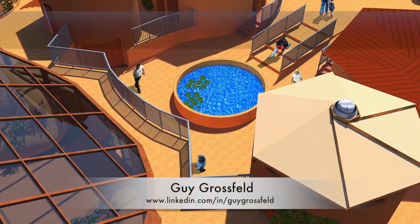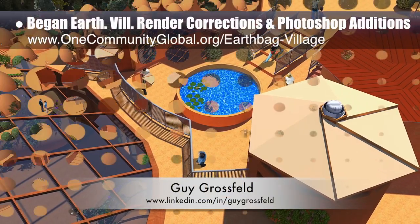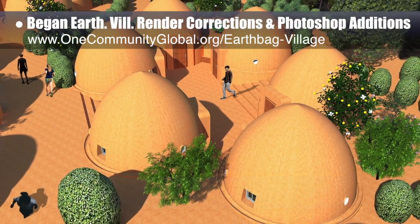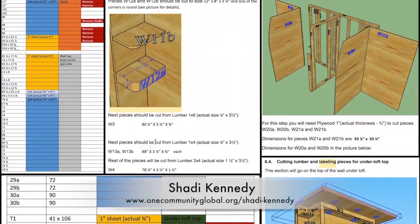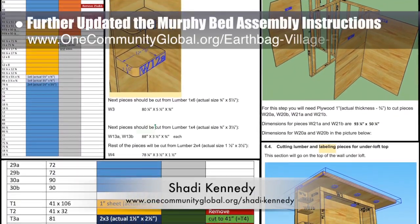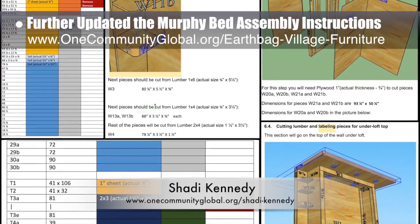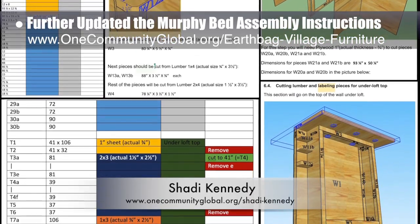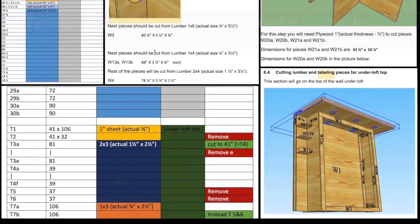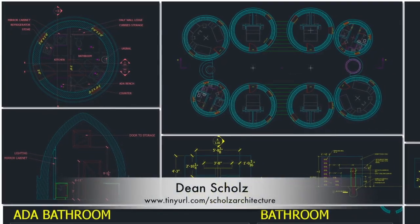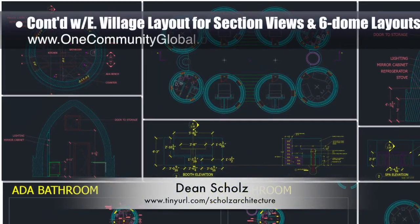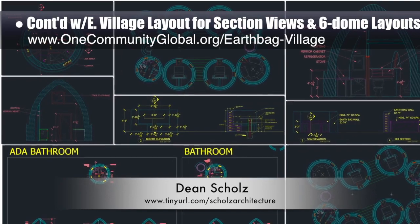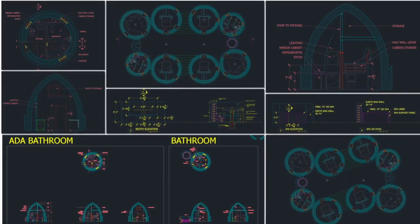Guy Grosfeld, graphic designer, rejoined the team and helped with render corrections and Photoshop additions for the earthbag village, completing his part on three renders. Shawty Kennedy, artist and graphic designer, completed his 29th week leading development of the Murphy bed instructions — this week creating a detailed list of wall section parts and scouting potential build issues throughout the existing materials list and assembly instructions. Dean Schulz, architectural designer, also continued working on the earthbag village, with this week's focus on continued development of section views and six-dome layouts, as shown in his weekly update 137.